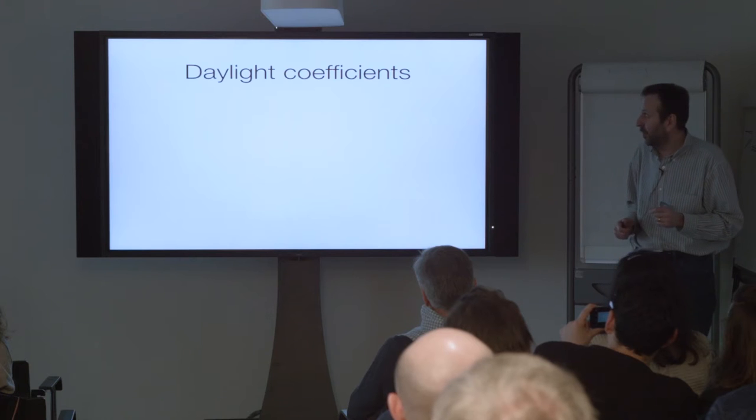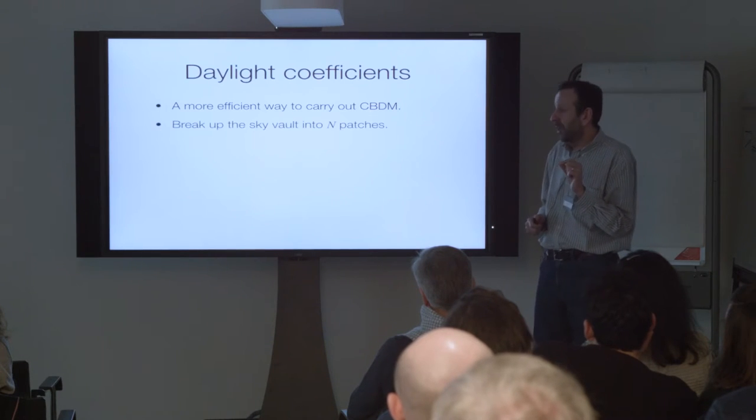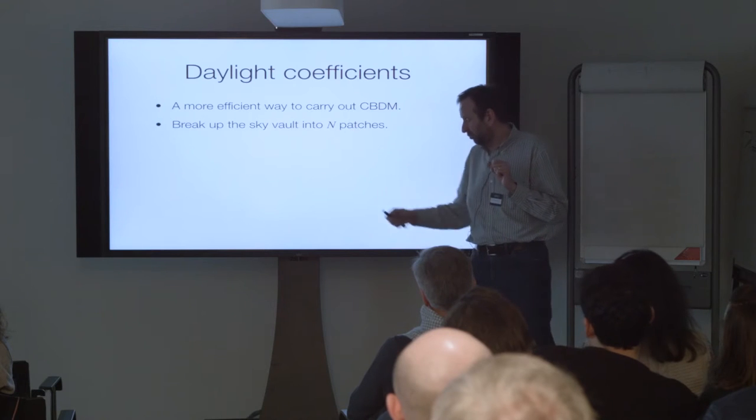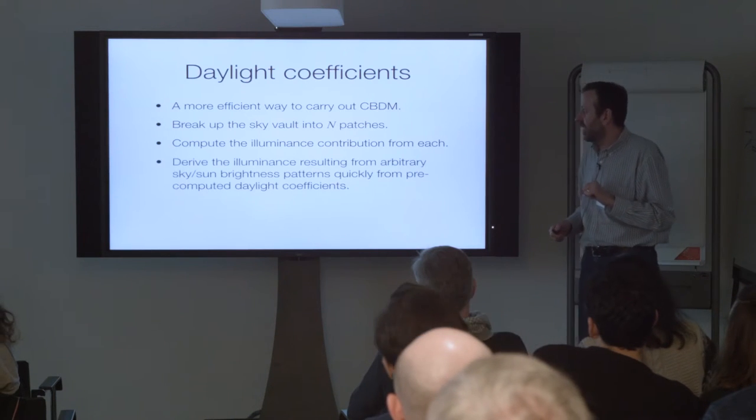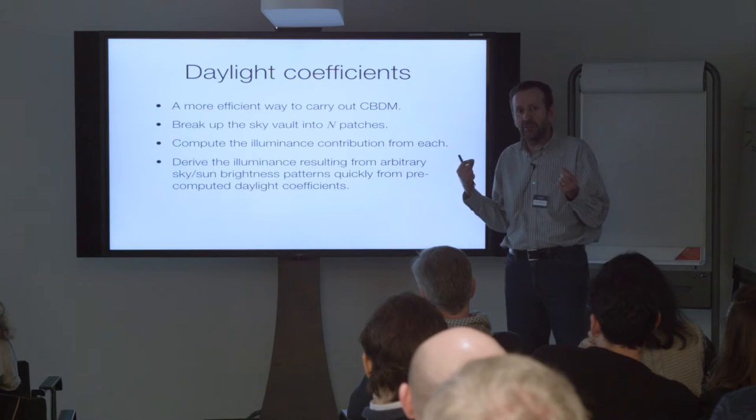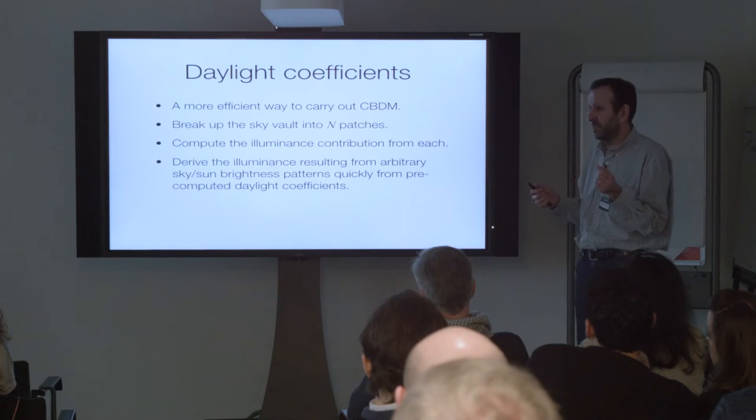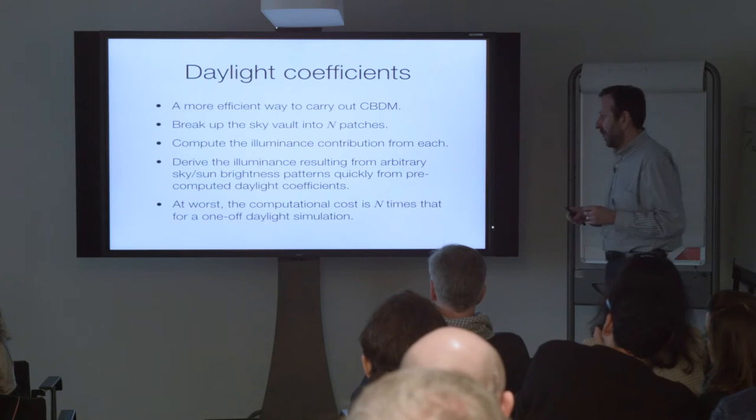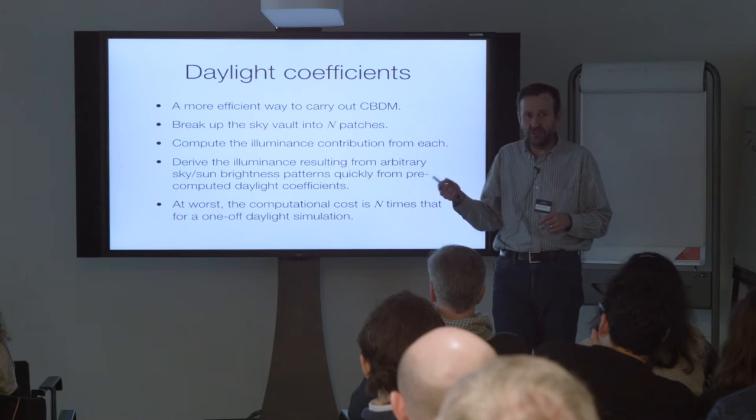A much more efficient approach is daylight coefficients. It's much more efficient to carry out climate-based daylight modelling with daylight coefficients because we break up the sky into patches and treat each patch independently. So say we have n patches, we compute the illuminance contribution from each one and then derive the illuminance resulting from arbitrary sky and sun patterns from those pre-computed values. So we're doing very quick arithmetic on pre-computed values. We're not doing lighting simulation which can be CPU intensive. At worst the computational cost is the number of patches times that for a one-off standard daylight simulation using radiance.